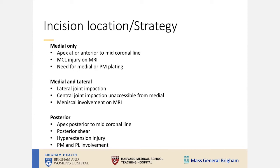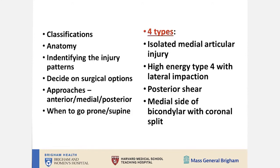Regarding when to go posterior: especially when you have an isolated hyperextension injury with a posterior shear involving both posterior medial and posterior lateral, it is easier to approach this in the prone position. To summarize, there are four subtypes of Schatzker 4: isolated medial, high energy type 4 with lateral impaction, posterior shear, and medial side as part of a bicondylar fracture.